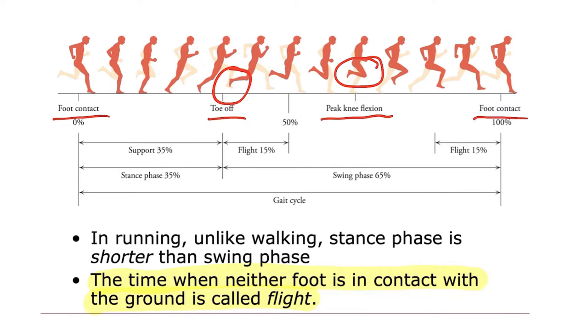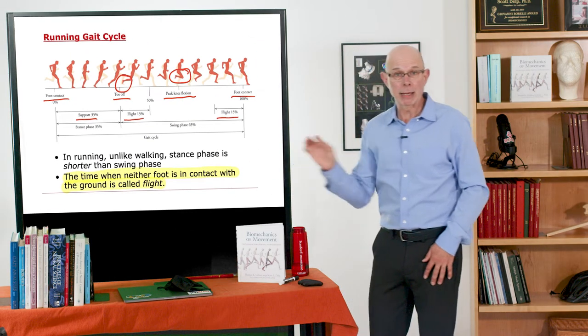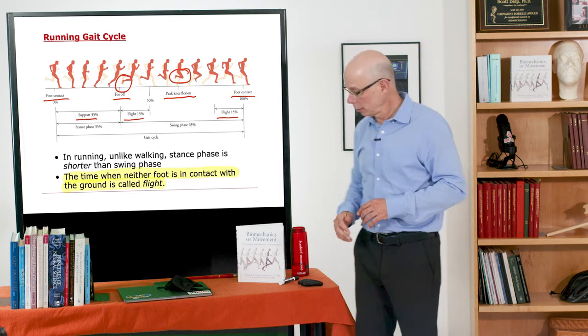And that occurs about the middle of the flight phase. So there is a support phase, or stance phase, and a flight phase for each leg, about 15%. And that varies, of course, with speed. The faster you go, the shorter the stance phase.